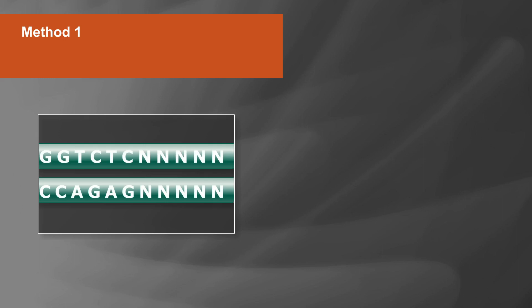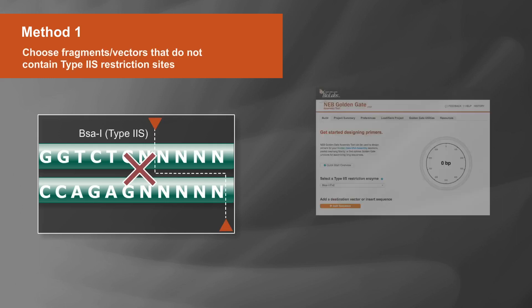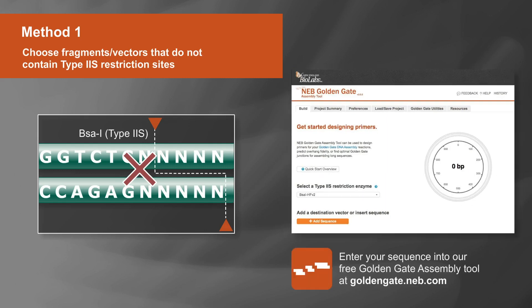Method 1: Be sure to choose fragments and vectors that do not contain type 2S sites. You can easily check by entering your sequence into our free Golden Gate assembly tool.